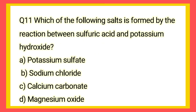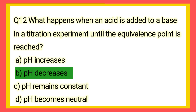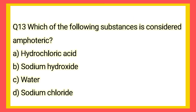Question 11: Which of the following salts is formed by reaction between sulfuric acid and potassium hydroxide? Potassium sulfate — that option is the correct answer. Question 12: What happens when an acid is added to a base in a titration experiment until the equivalence point is reached? pH decreases. Option B is the correct answer.